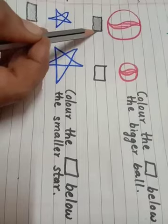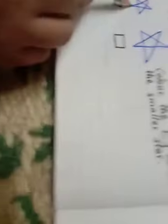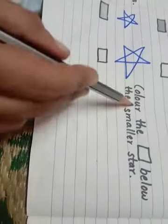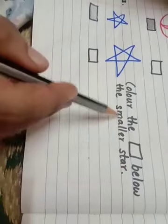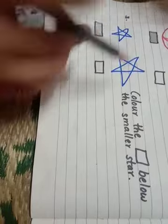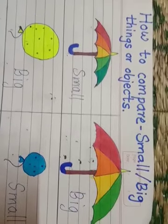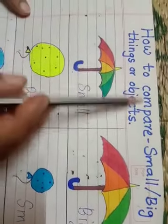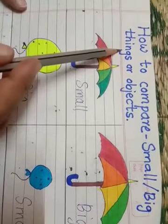Small star, big star. Color the box below the smaller star. Which is the small star here? This. I have shown you during the lesson how to compare small and big things or objects.